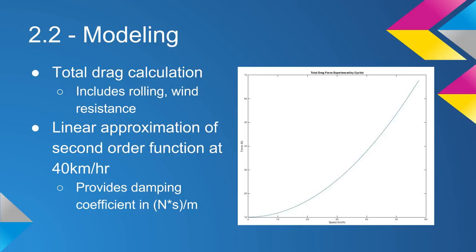This is how we figured out our drag coefficient. It's a model of force against the rider with speed. We estimated that a rider regularly travels 40 kilometers an hour, which is like a street speed, and so we linearized it at 40 kilometers an hour to provide the coefficient.